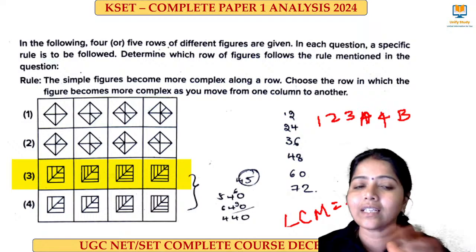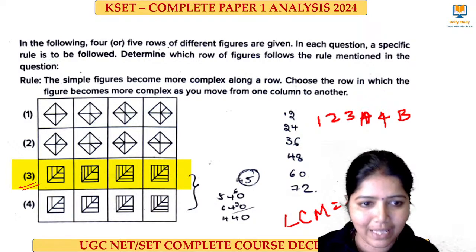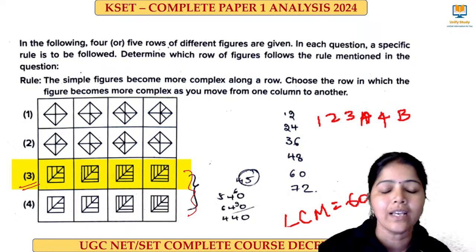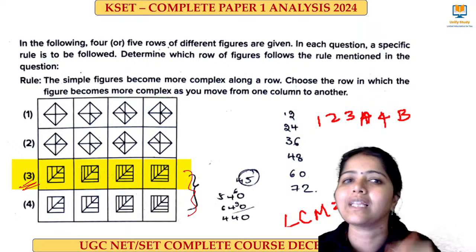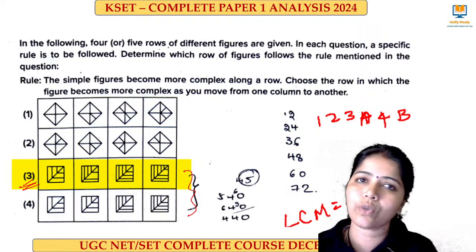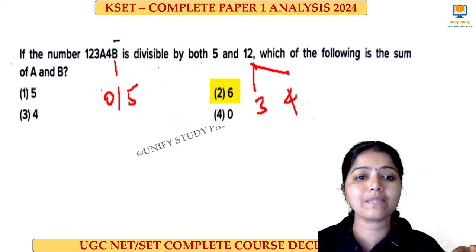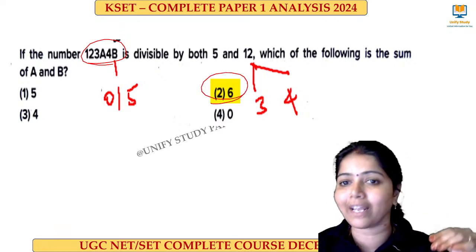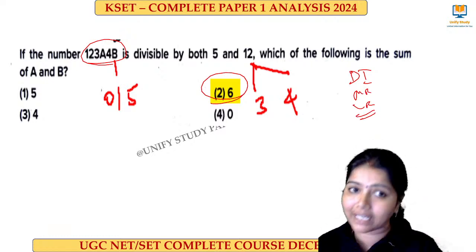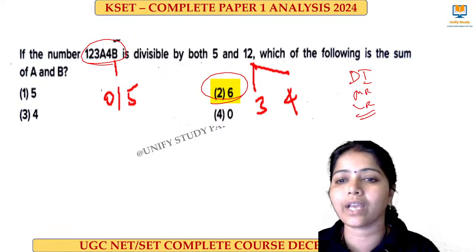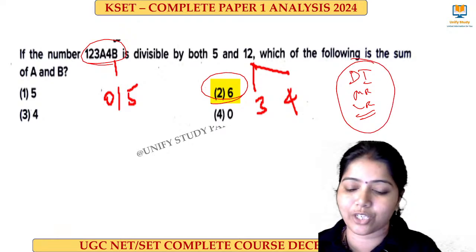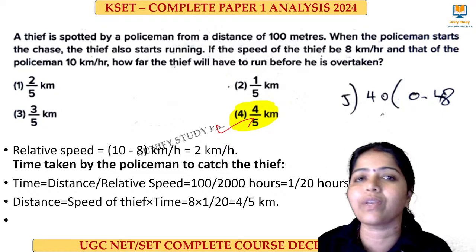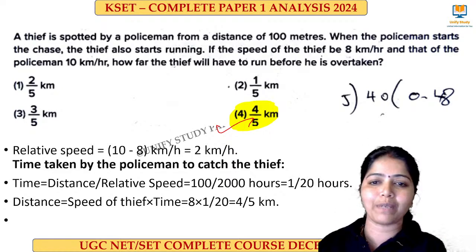A question from logical reasoning — according to my assumption, the complexity lies between two figures. This figure has more number of lines drawn, so it is more complex. There is also a question where a number has been given and they have to say it is divisible by 512 — the right answer is 6. More detailed explanation of DI, MR and LR will be given as a separate class. The right answer for the distance question is 4 by 5 kilometer.